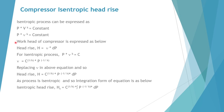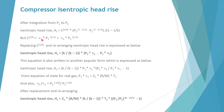Now for compressor isentropic head rise: the isentropic process is expressed as p into v to the power k equals constant, or p into specific volume to the power k equals constant. The same way, head rise is integral of v into dp. Replacing v and integrating, the isentropic head rise can be written as: k upon k minus 1, multiplied by the bracket p2 into v2 minus p1 into v1. This is one way through which isentropic head is expressed.